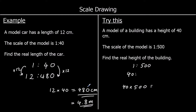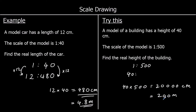4 fives are 20, and we've got three zeros, so we have 20,000 cm. If we wanted to write that in meters we'd divide by 100, so it's 200 meters tall.